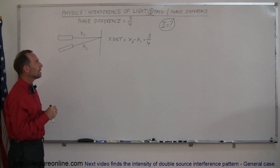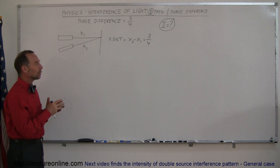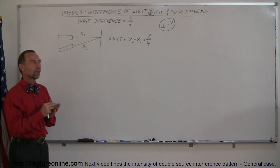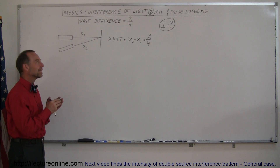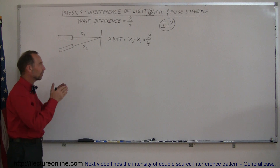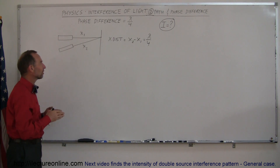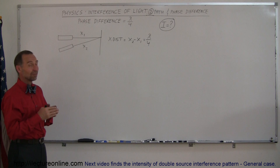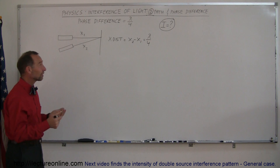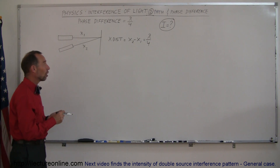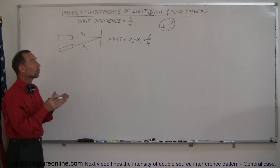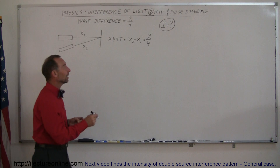So what would it be if the path difference is exactly equal to a quarter of a wavelength? What would be the intensity of the beams as they come together? The way to look at this is simply to do a vector summation of the electric field oscillations if they were 90 degrees out of phase.